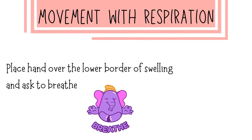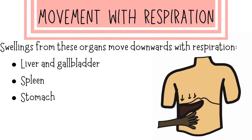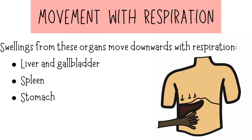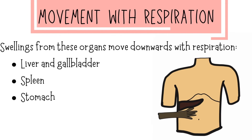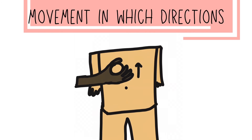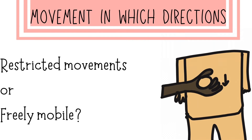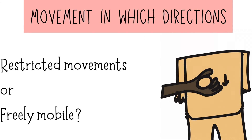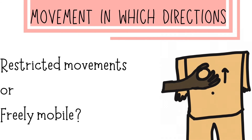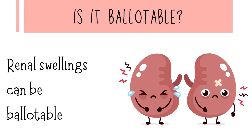We confirm movement with respiration by placing a hand over the lower border of the swelling and asking the patient to take deep breaths. Swellings originating from the liver, gallbladder, spleen, and stomach move downwards, pushing our hand downwards. We then assess mobility by holding the swelling and seeing if it is mobile and in which directions. A fixed malignancy will have restricted movement, while a swelling not fixed to underlying structures will be freely mobile.